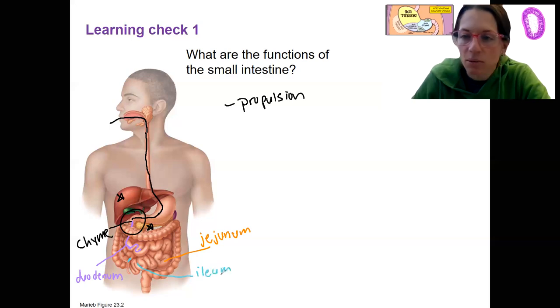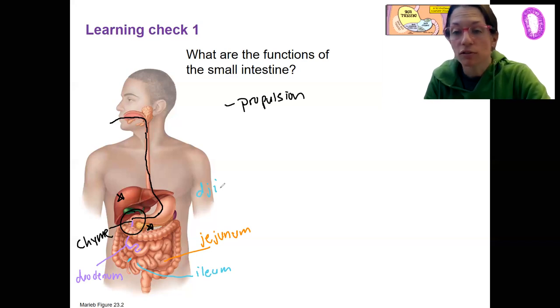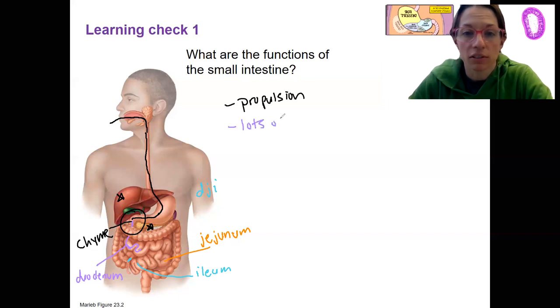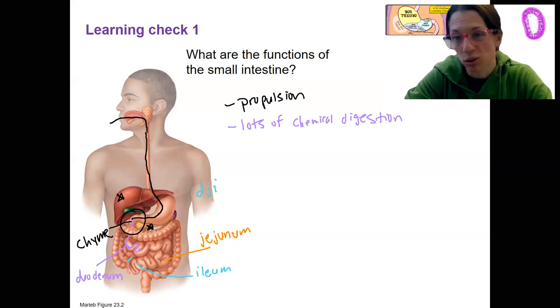How do you spell ileum? Not the same way as the ilium bone. It's an E. Spell that one correctly. So throughout those three regions, the function does change. We're going to be focused on the duodenum, which is convenient if that's first. The duodenum is where there's going to be secretions from the pancreas and liver coming in, and we're going to have lots of chemical digestion, particularly in the duodenum. This is a main function of the small intestine.